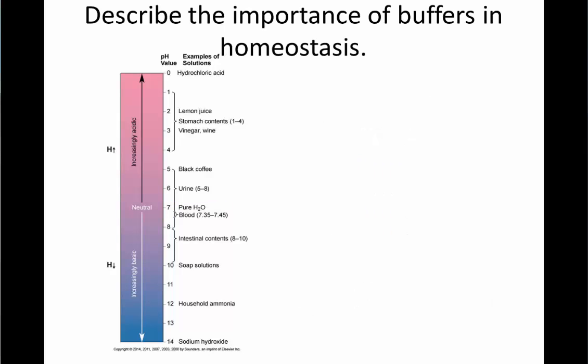We want to talk about the importance of buffers in homeostasis. A buffer is a chemical that we can add to a solution that helps to maintain our pH, even if we're adding more hydrogen ions or more hydroxide ions to the solution. As you can see from the pH scale, pure water lies at a pH of 7. Blood lies in a range of 7.35 to 7.45 pH.